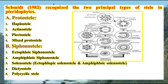According to Smith in 1982, the steles in pteridophytes are classified into two main groups: the first group is protostele and the second group is siphonostele. Protostele includes haplostele, actinostele, plectostele, and mixed protostele. Siphonostele includes ectofloic siphonostele, amphifloic siphonostele, solenostele, dictyostele, and polycyclic stele.